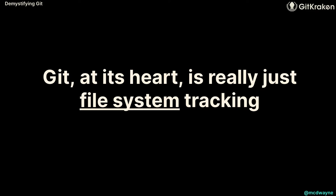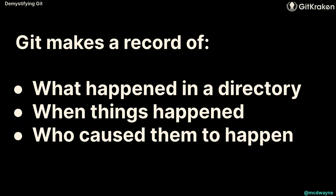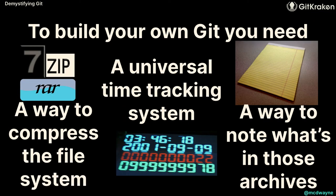When I first learned Git, I learned it was a way to manage code. Then I learned it's a way to manage files, then to manage projects. Really, it's a way to track your file system over time. What's in these directories and sub-directories? What happened in them, when did it happen, and who caused it? These are the things we write down with commits.